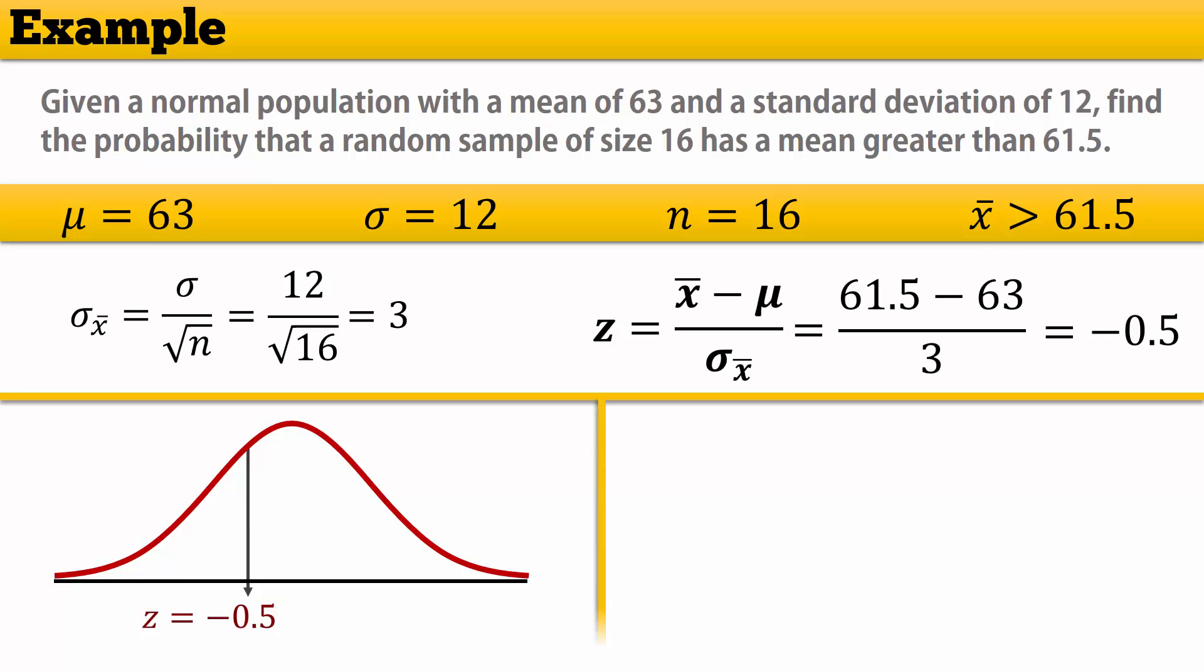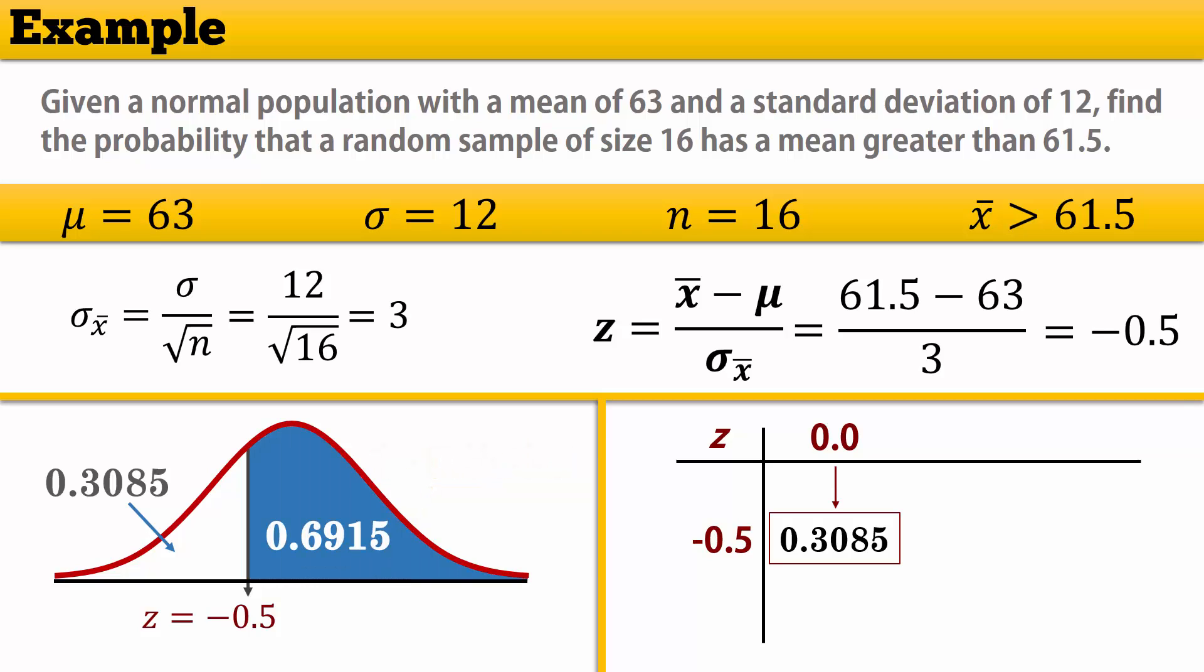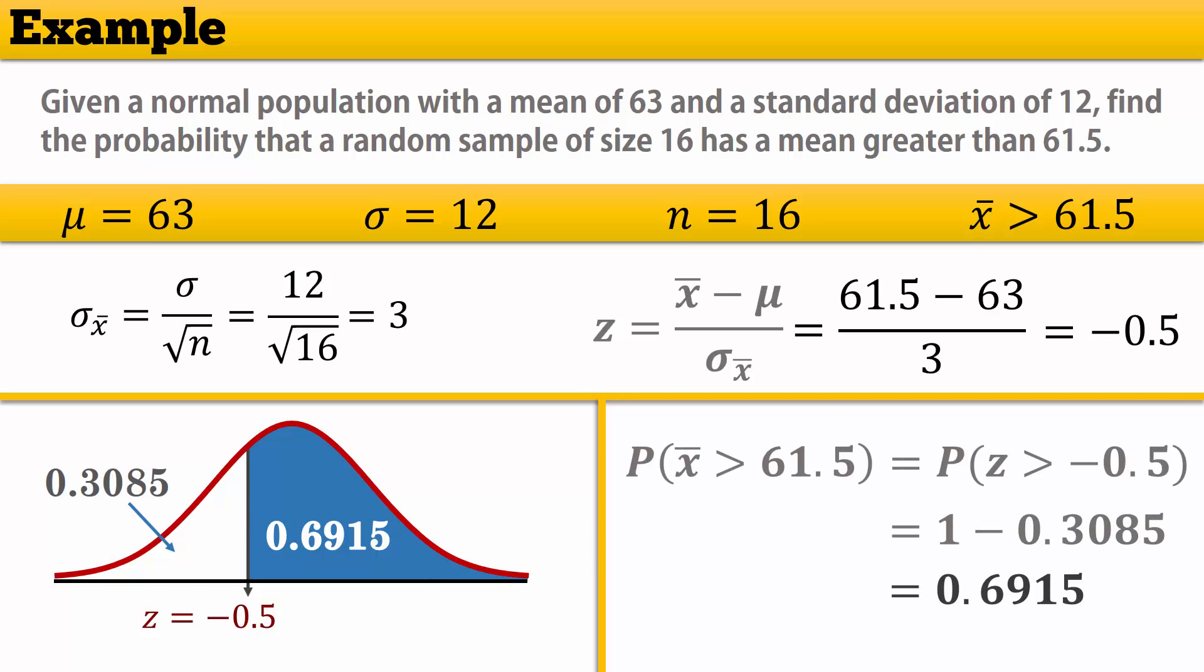Looking that up in the less than cumulative normal table, we have a less than area of 0.3085. So the greater than area is 1 minus 0.3085, which gives 0.6915. That is, the probability that the sample mean is greater than 61.5 is 0.6915.